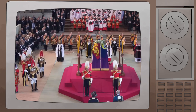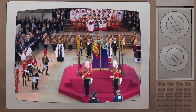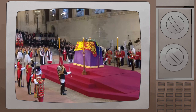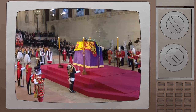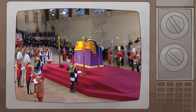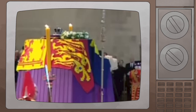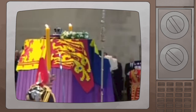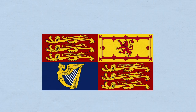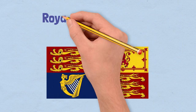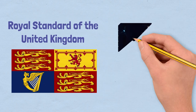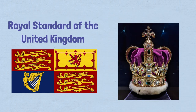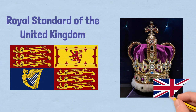As you may already know, the coffin of Queen Elizabeth II is currently lying in state in Westminster Hall. The public is able to visit her coffin to pay their respects to the deceased sovereign. You may have noticed this particular flag being draped onto the coffin. This flag is indeed the royal standard of the United Kingdom, effectively the official flag of the reigning monarch of the UK.